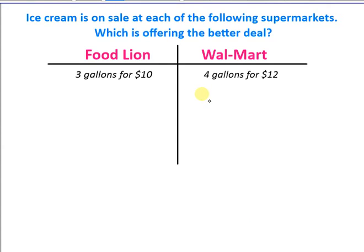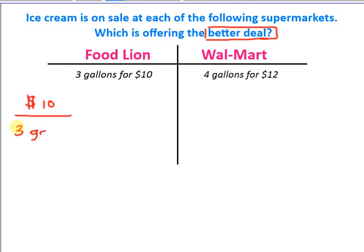Now we're going to take it up a notch. We need to determine which one is going to be the better deal. Ice cream is on sale at two supermarkets. At Food Lion, I have three gallons of ice cream for $10. At Walmart, I have four gallons of ice cream for $12. To figure out which is the better deal, I need to find the rate and unit rate for each. The rate for Food Lion is $10 over three gallons. When I divide, I get $3.33 for one gallon.